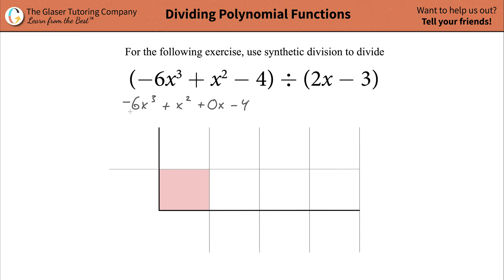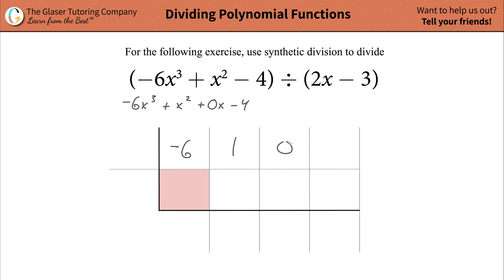So now we have four coefficients. The coefficient of the x squared term is just 1 if there's nothing there. So we plug in negative 6, then we plug in 1 for the x squared, then we plug in 0 for the x, and then we plug in negative 4 for the constant.